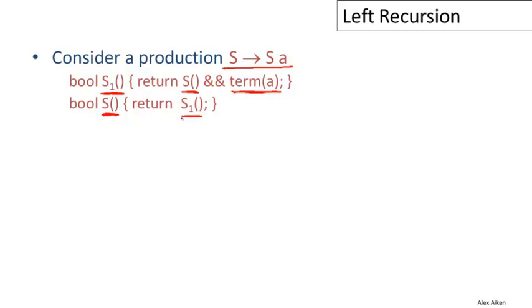And now I think you can see the problem. What's going to happen? When we go to parse an input string, we're going to call the function S, which is going to call the function S1. And then what's the function S1 going to do? Well, the very first thing it's going to do is to call the function S again. And as a result, the function S is going to go into an infinite loop, and we're never going to succeed in parsing any input. This will always go into an infinite loop.